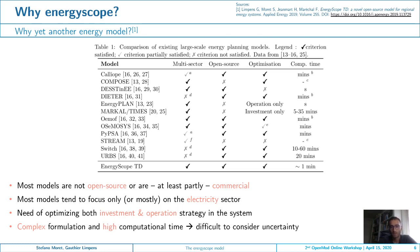The question of course is: why should we develop another energy model? When we started developing Energy Scope, we realized that most available models, especially back then, were not open source, were focusing only or mostly on the electricity sector, were not optimizing both the investment and operation strategy of the energy system, and featured rather complex formulations and high computational time, making it very difficult to consider uncertainty.